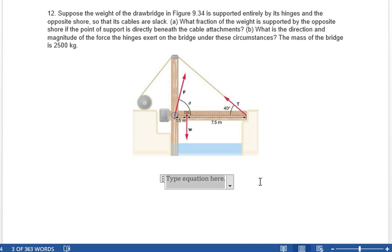So, the weight of the bridge, mg, times its distance from the hinge, 1.5 meters, that is a negative torque, because it is a clockwise motion. And then the force from the opposite shore times the 9 meters to the hinge is a positive torque.